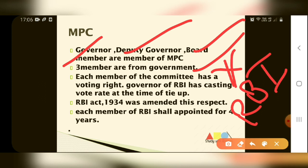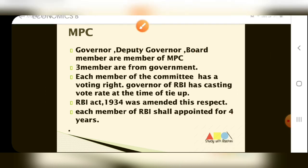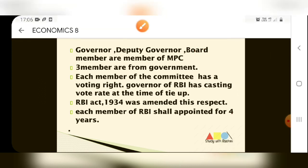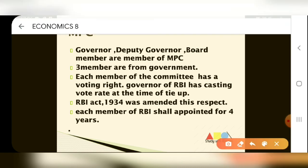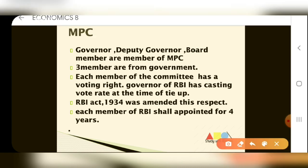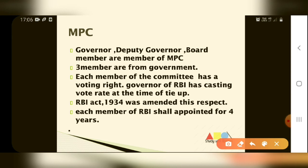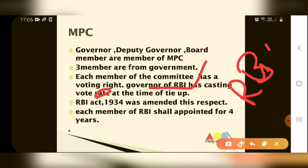If the 3 RBI members say yes and the 3 Government of India members say no, what will happen — pass or not? The Governor of RBI has a special right, the same as a casting vote right. So the Governor of RBI has the casting vote — giving the RBI side effective power.